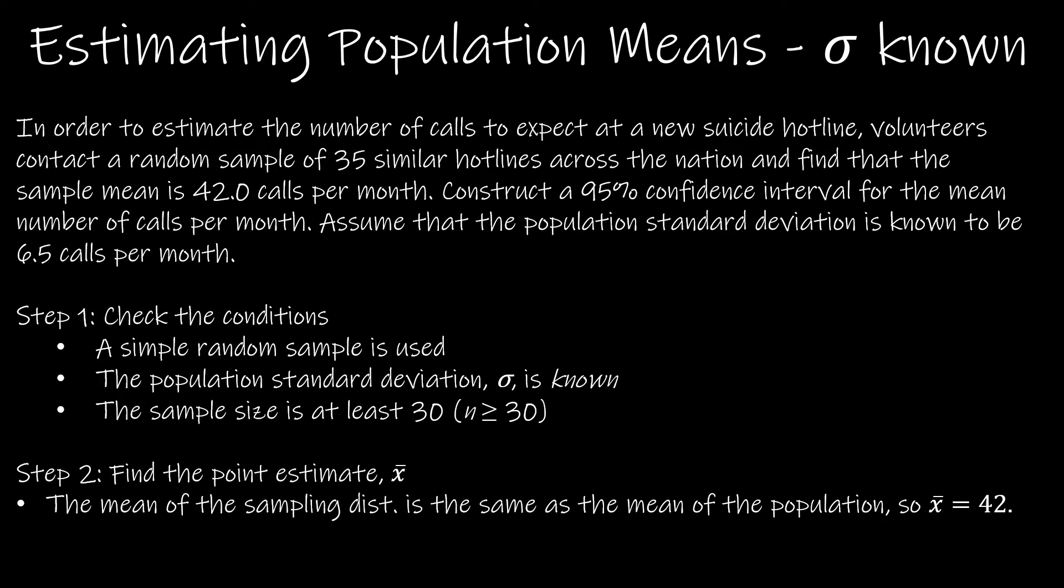So let's go through a full example together. And in this example, we're going to go through every single step. In order to estimate the number of calls to expect at a new suicide hotline, volunteers collect a random sample. So this is going to be key because that's going to help us know that the conditions are met of 35 similar hotlines across the nation to find a sample mean of 42 calls per month.